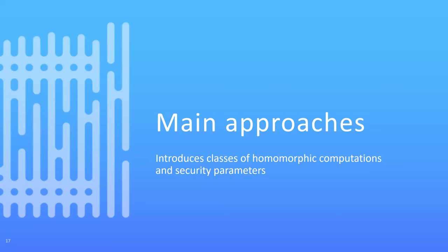For learning about LWE and ring LWE concepts, the homomorphic encryption security standard is a good first source as it tries to summarize facts related to lattices. There are some good surveys out there, though everyone has their own preference. Regarding the size of P and Q: that's an active area of research and cryptanalysis. Standards have been set through the homomorphic encryption.org standards organization, with lookup tables for the size of Q. We recommend using those standard tables to guarantee security.